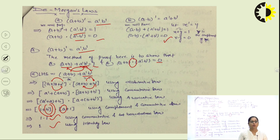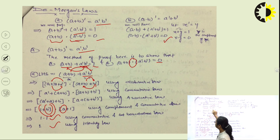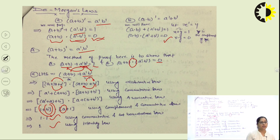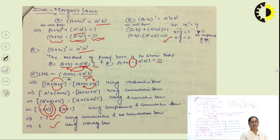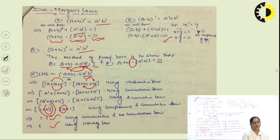So I hope you understand the different Boolean algebra expressions, the different operators we use, and the different axioms and laws. Thank you so much.